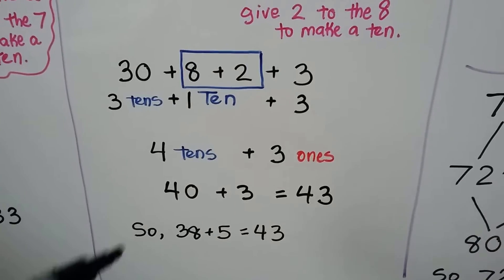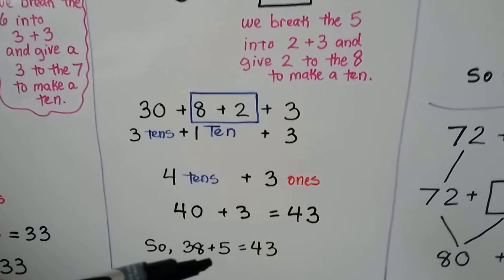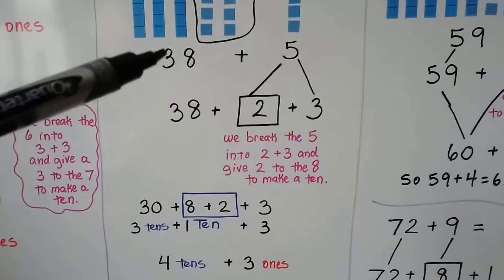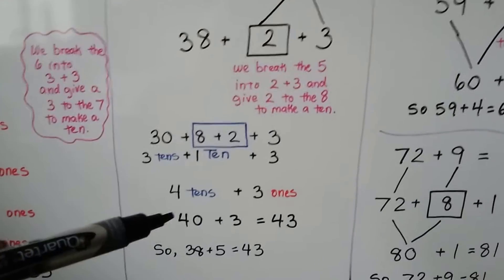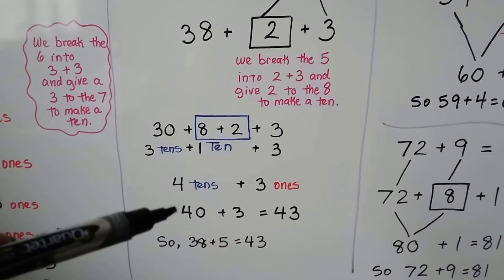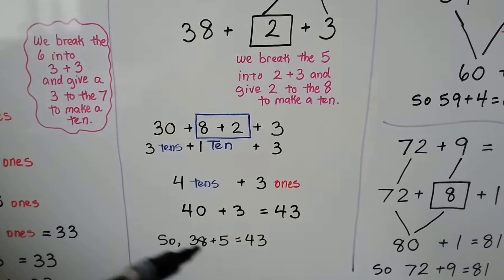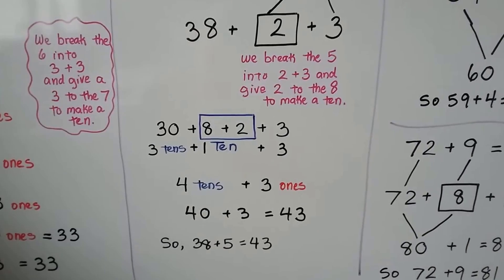So our initial problem, thirty-eight plus five, is the same thing as forty plus three, and it's equal to forty-three.